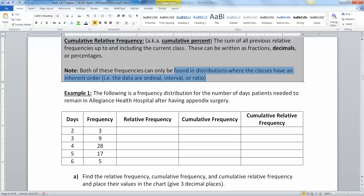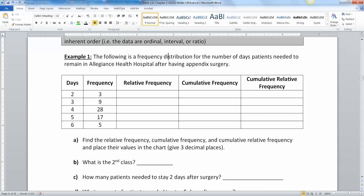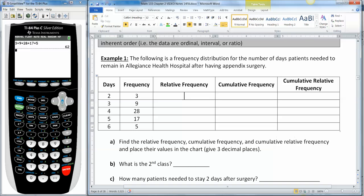All right, so the following is a frequency distribution for the number of days patients need to remain in Allegiance Health Hospital after having appendix surgery. For example we had three patients that needed to stay two days, nine patients that need to stay three days and so on. We're going to find the relative frequency, cumulative frequency, and cumulative relative frequency of all of these groups and place their values in the chart. Well the first thing we're going to do is add them up, which I already did. I found the total for this column is 62.